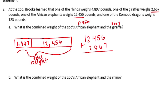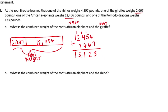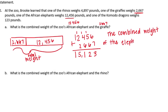6 plus 7 is 13 — carry the 1; 1 plus 5 plus 6 is 12 — carry the 1; 1 plus 4 plus 6 is 11 — carry the 1; 1 plus 2 plus 2 is 5; and bring the 1 down. Their combined weight is 15,123 pounds. The combined weight of the elephant and giraffe is 15,123 pounds.